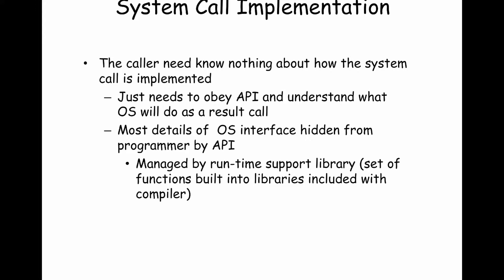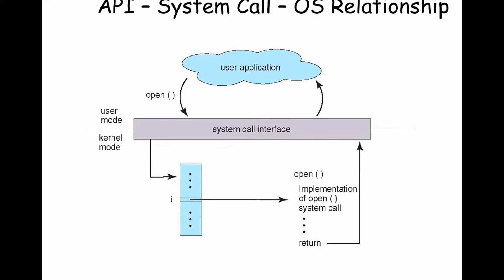Here's a schematic of what happens, in particular for the open system call. You have your user application at the top; you issue the open system call through the system call interface like POSIX or Win32. You drop to kernel mode — it's system call i, where i corresponds to open. It indexes into the table and calls into the OS runtime the implementation of open. Open does whatever it does in the runtime, then returns. When you return, you go back to user mode — flipping the mode bit back to user mode to maintain protection of system resources.